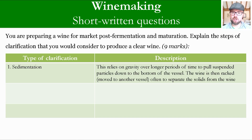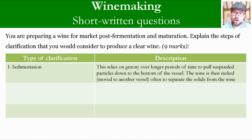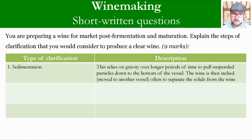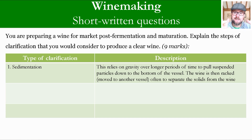First up is sedimentation. This is where we leave the wine to do its own thing and it will sediment out. If you are clued up on geology, sedimentation is the depositing of sediment over longer periods of time. One mark for naming sedimentation, then two marks for the description: this relies on gravity over longer periods of time to pull suspended particles down to the bottom of the vessel. The wine is left in a vessel with gross and fine sediment, and over time that sediment falls towards the bottom of the vat.